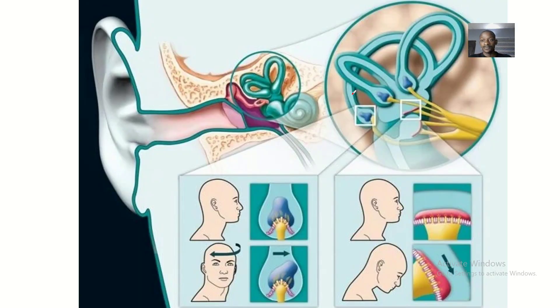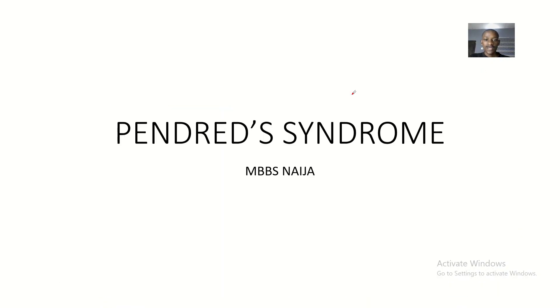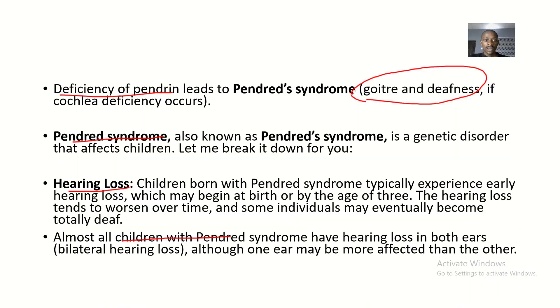If pendrin is deficient, there are insufficient amounts of iodine moved into the cell, so thyroid hormone cannot be produced in sufficient amounts. Basically, we've covered the definition, causes, and treatments of Pendred Syndrome.